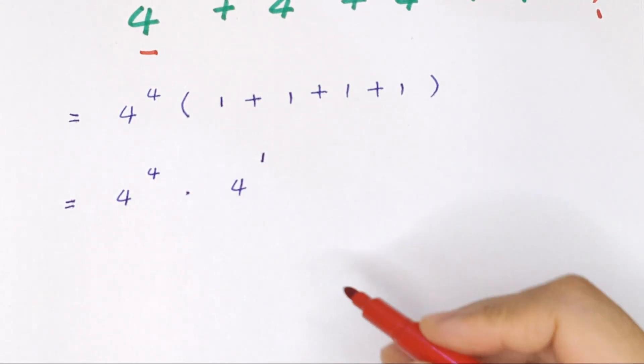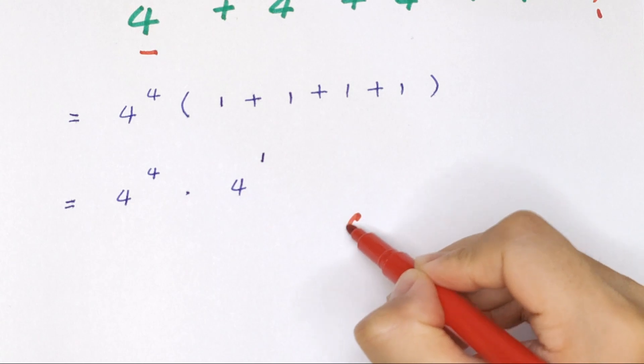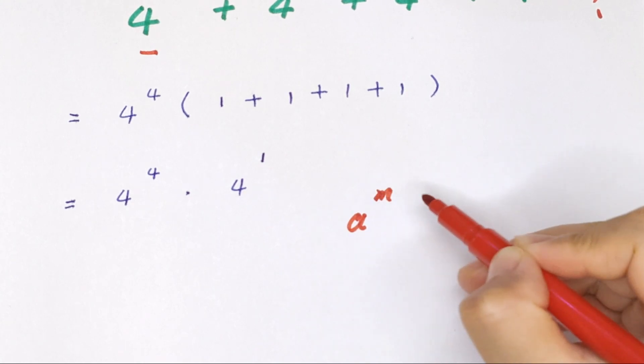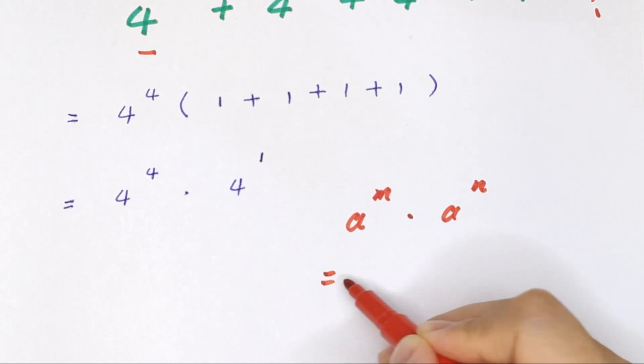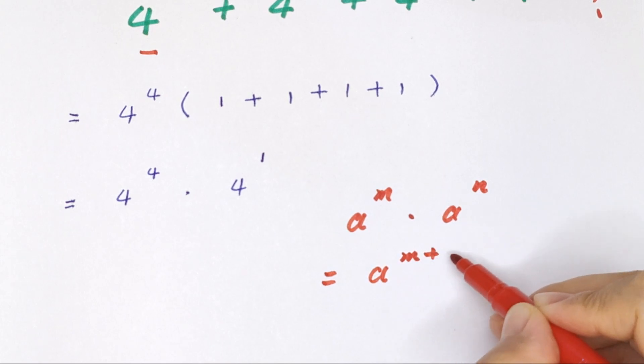Now we apply the formula that a to the power of m times a to the power of n is equal to a to the power of m plus n.